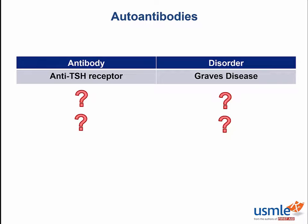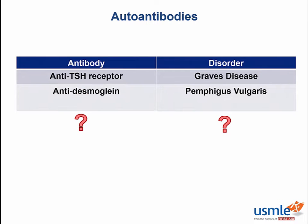Our next patient presents to their dermatologist with multiple skin lesions all over their arms and trunk. The lesions are painful and the top layer of skin sloughs off with some lateral pressure applied. The diagnosis is Pemphigus vulgaris, which is Nikolsky sign positive with the skin sloughing. The associated autoantibody is anti-desmoglein.